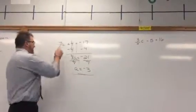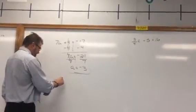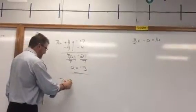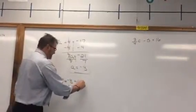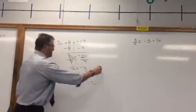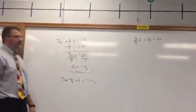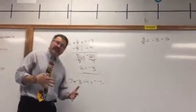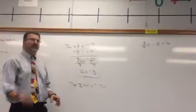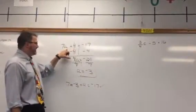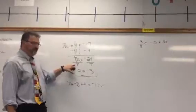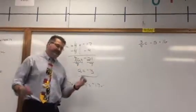And to check it, I can go back up here. 7 times negative 3 is negative 21. Plus 4 does indeed equal negative 17. So that checks. So again, five steps that I looked at, but I only did two. I did step four, where I got rid of the number being added to my variable. And I did step five, getting rid of a multiplication.